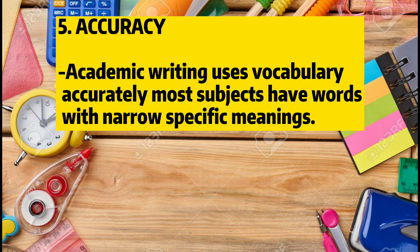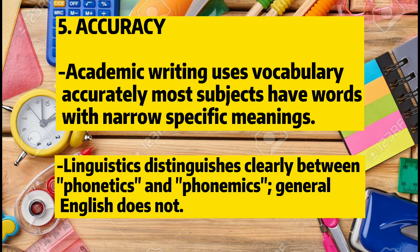Number five: Accuracy. Academic writing uses vocabulary accurately. Most subjects have words with narrow, specific meanings. For example, linguistics distinguishes clearly between phonetics and phonemics, whereas general English does not.